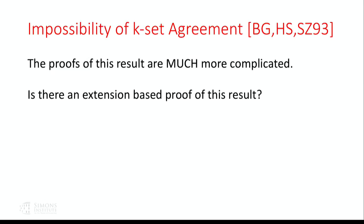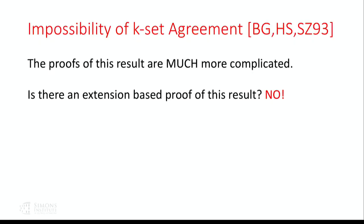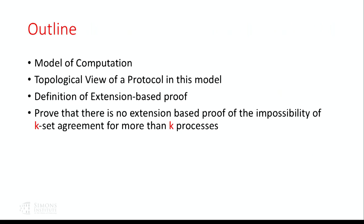K-set agreement is also impossible in asynchronous systems with more than k processes communicating using read-write registers. The first proofs came 10 years after the impossibility of consensus, by various authors including Mike, and they all use topological arguments. A natural question is whether this result has an extension-based proof — and what I'm going to show is that the answer is no.